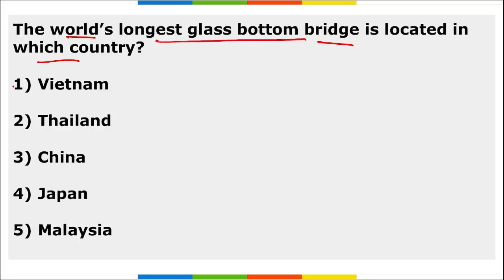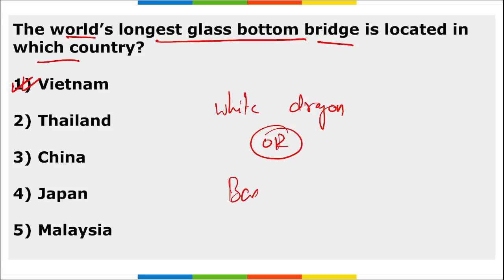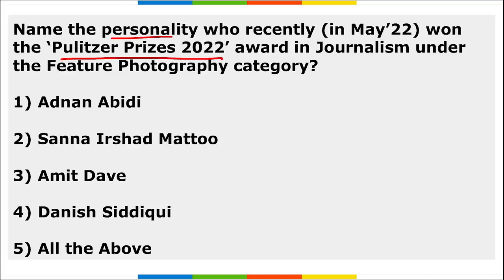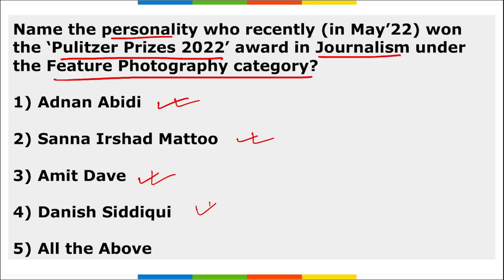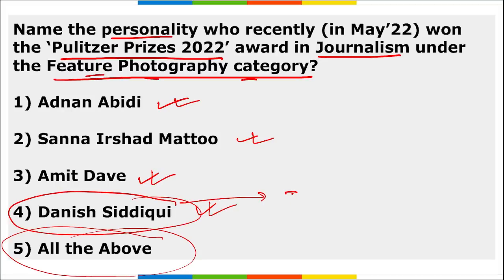The world's longest glass-bottom bridge is located in Vietnam. It is named the 'White Dragon' bridge, also known as the Bach Long pedestrian bridge. The Pulitzer Prize 2022 in journalism under the feature photography category was won by Adnan, Danish Siddiqui, and others. Danish Siddiqui was the journalist killed in Afghanistan.